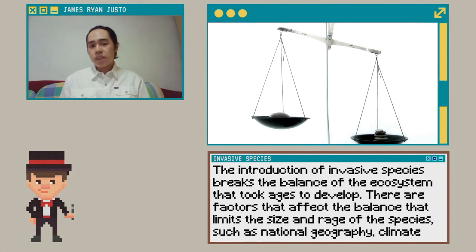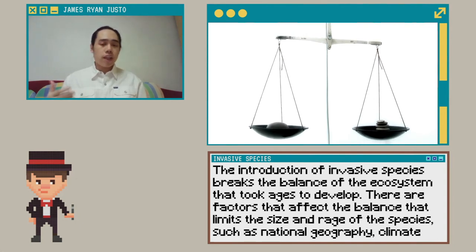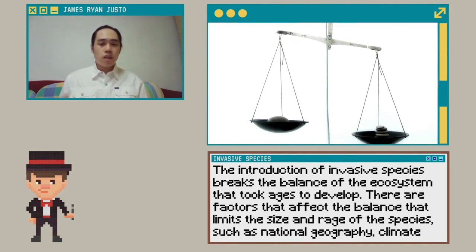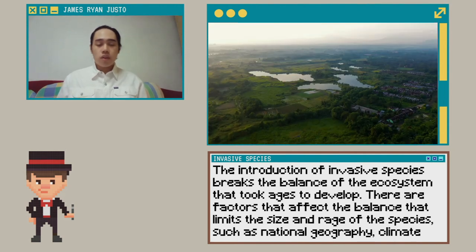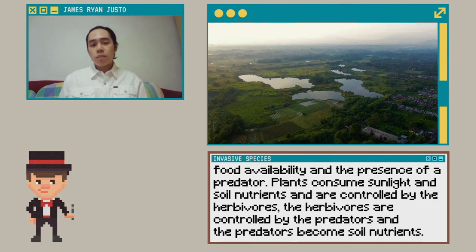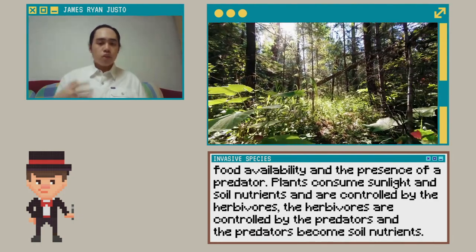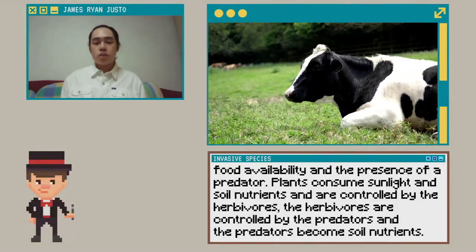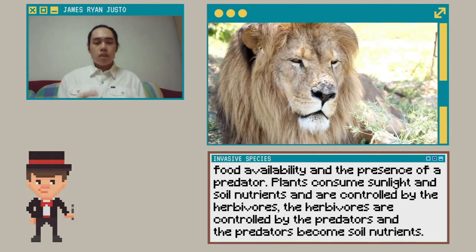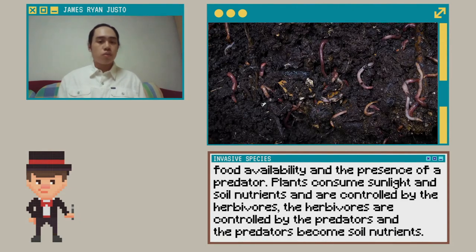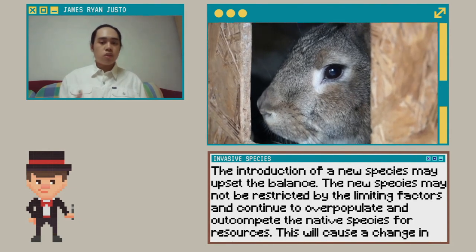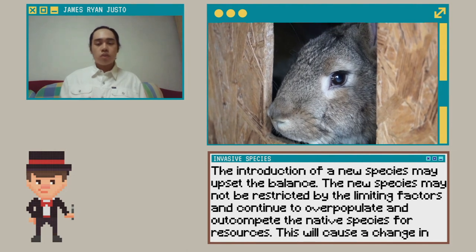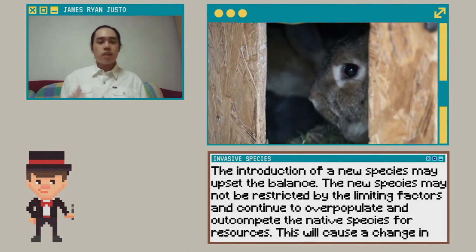The introduction of an invasive species breaks the balance of an ecosystem that took time to develop. There are factors that affect that balance, which limit the size and range of the population of a species, such as natural geography, climate, food availability, and the presence of predators. Plants consume sunlight and soil nutrients, which are consumed by herbivores, and the herbivores are consumed by their natural predators. The natural predators decompose and become soil nutrients consumed by plants. The introduction of new species may affect this balance.